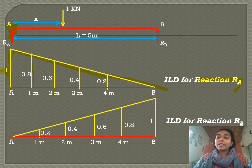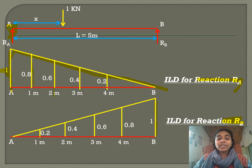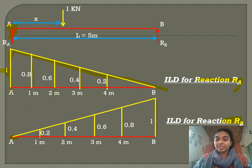For finding the influence line diagram for reaction RB, the ordinate will be 1 at B and 0 at A. For all the remaining points — 0.8, 0.6, 0.4, 0.2 at the corresponding distances — you can use similar triangle principles.